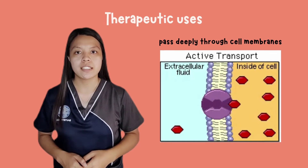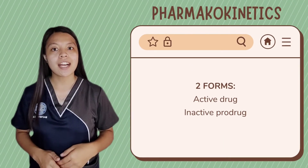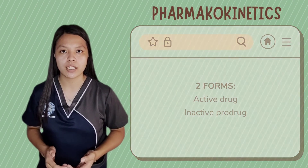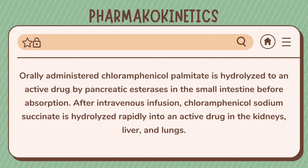Chloramphenicol is available in two forms: the active drug and the inactive prodrug. Orally administered chloramphenicol palmitate is hydrolyzed to active drug by pancreatic esterases in the small intestine before absorption. After intravenous infusion, chloramphenicol sodium succinate is hydrolyzed rapidly to active drug in the kidneys, liver, and lungs.